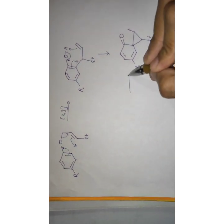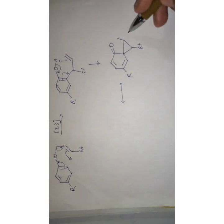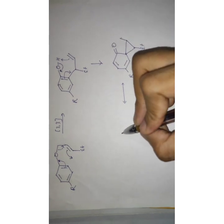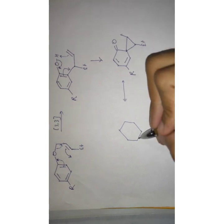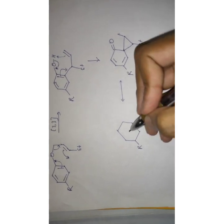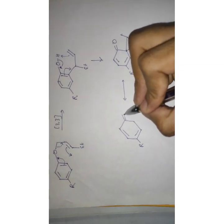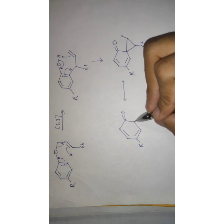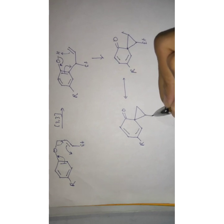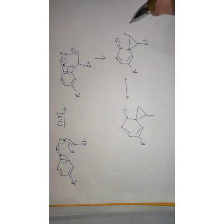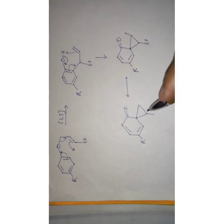Now what we do is we rotate this bond around — we rotate this. The bicyclic intermediate is rotated to give a new orientation of the double bonds and oxygen.